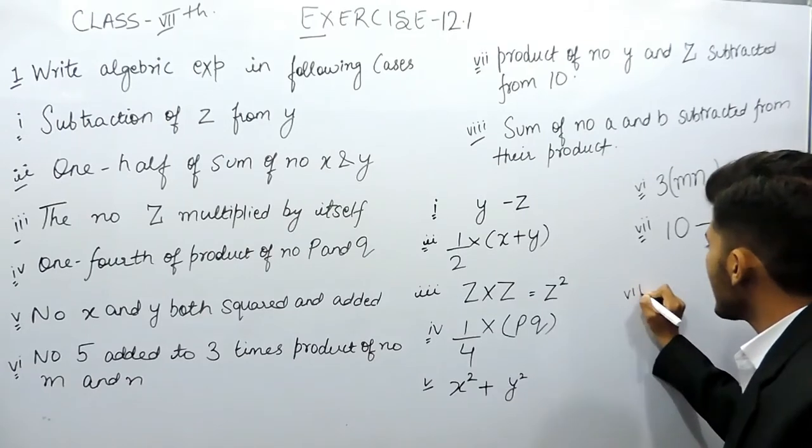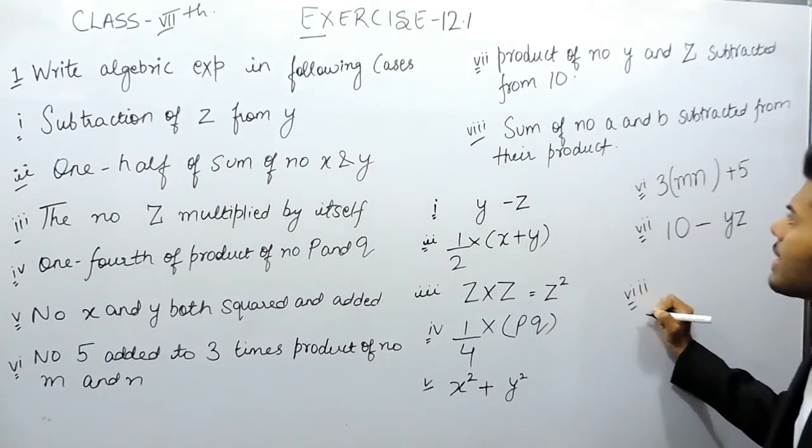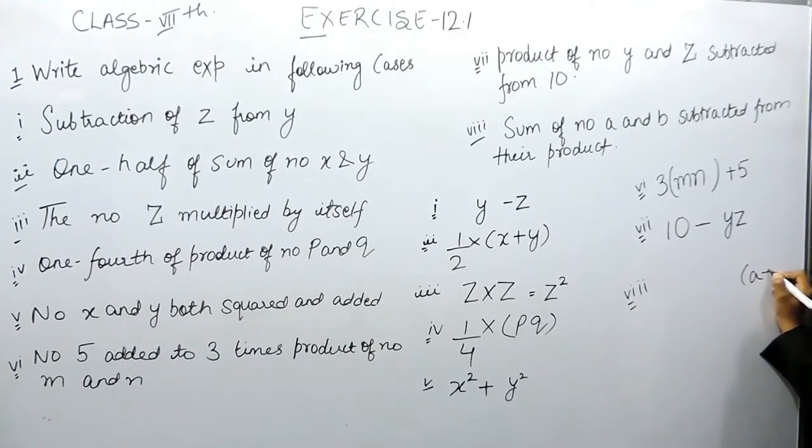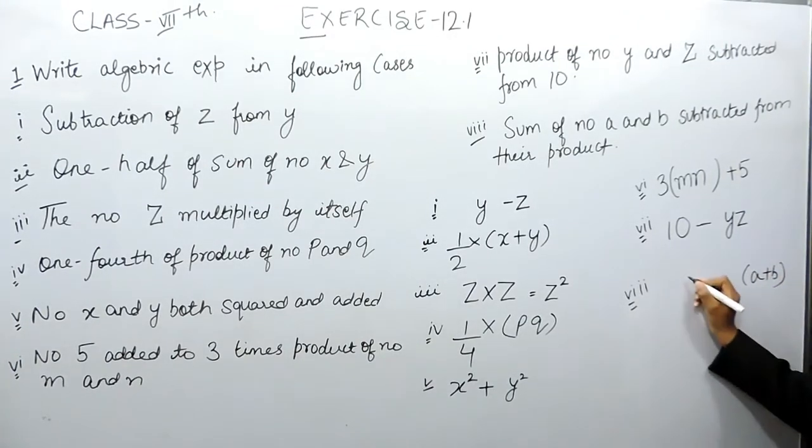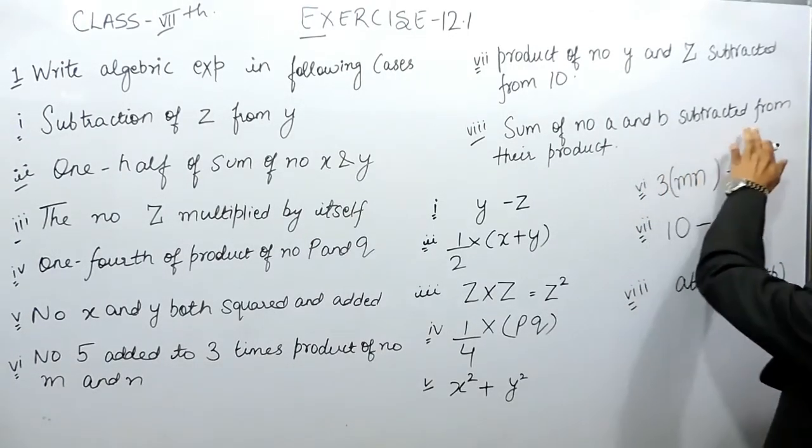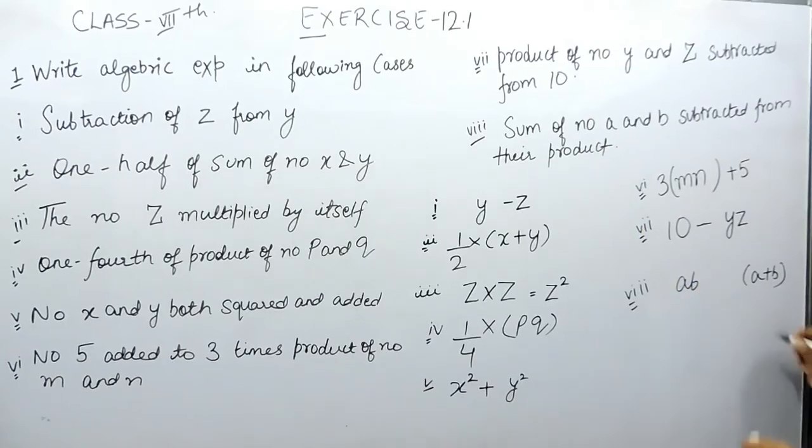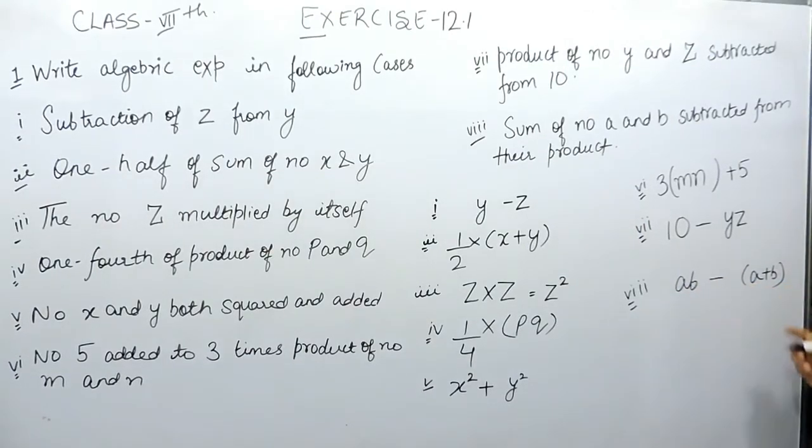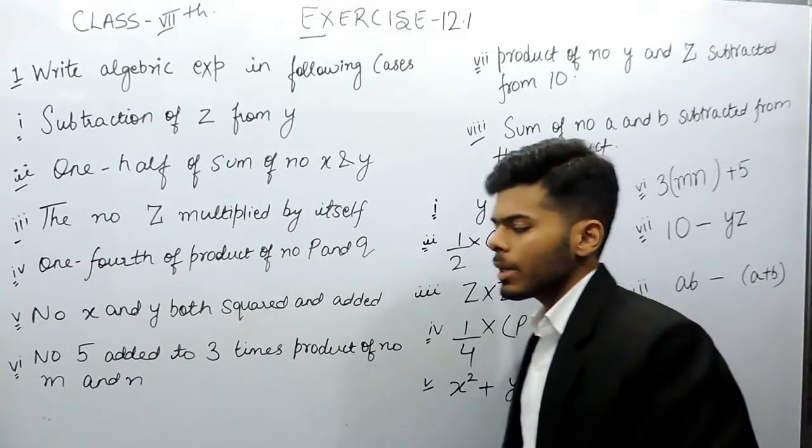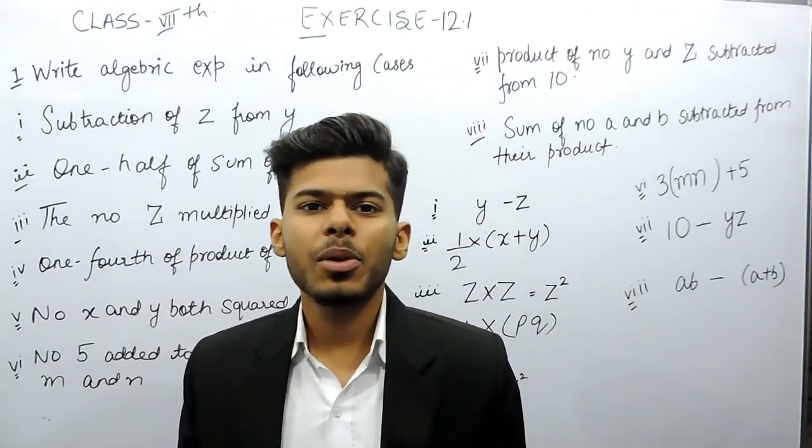And the last part says sum of number a and b subtracted from their product. So sum of numbers a and b is a plus b. Their product is ab. And the sum will be subtracted from product means product will come first minus a plus b. So these are the answers for these eight parts. This is how you can solve this question. Thank you.